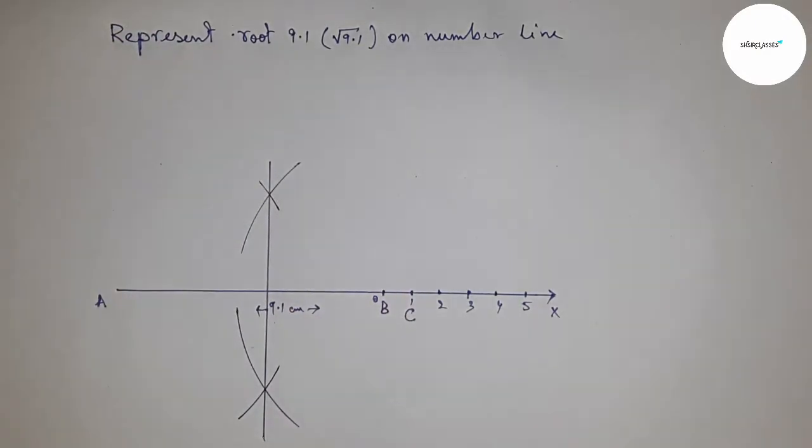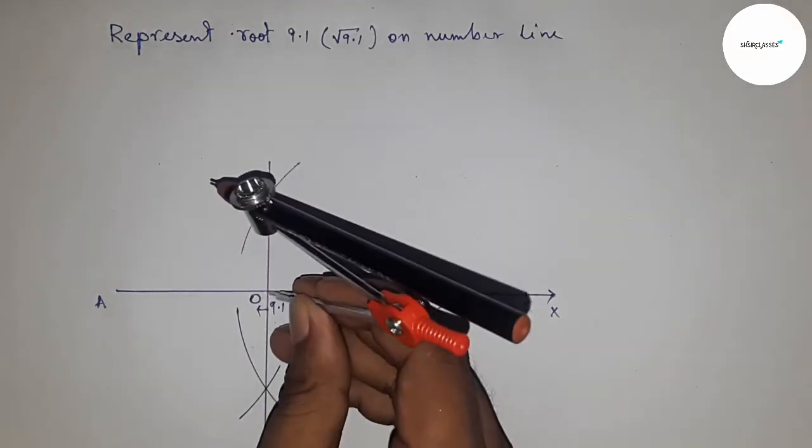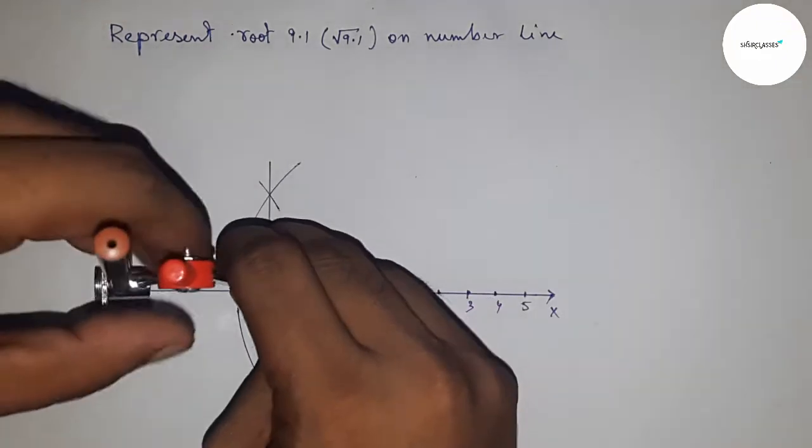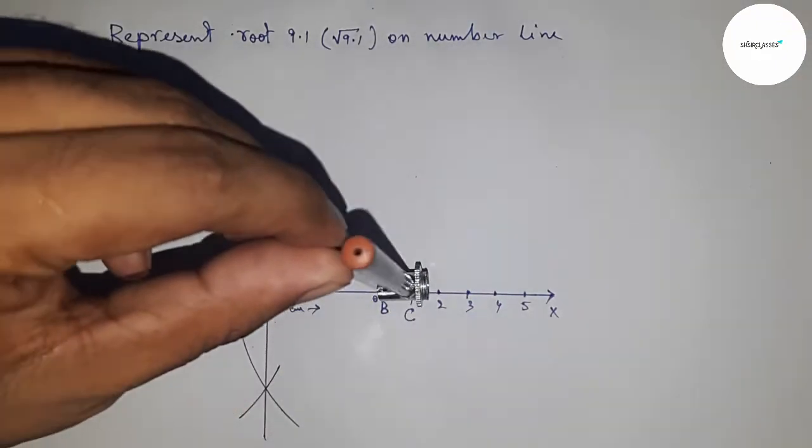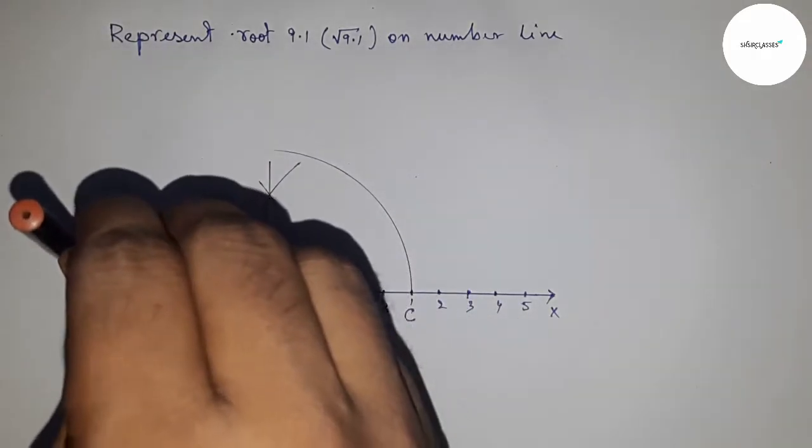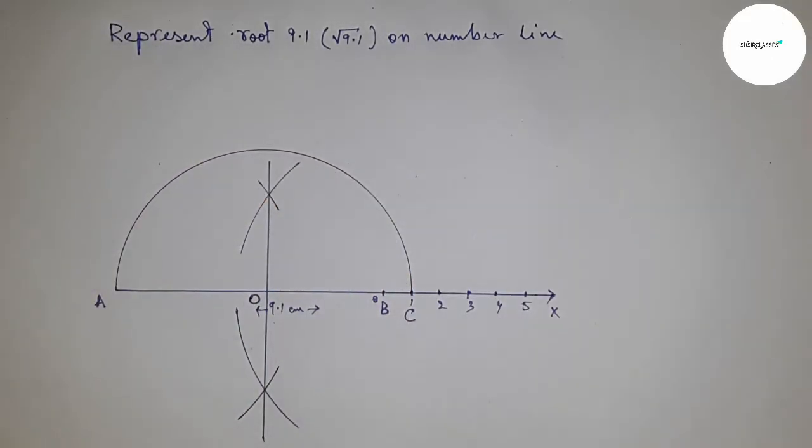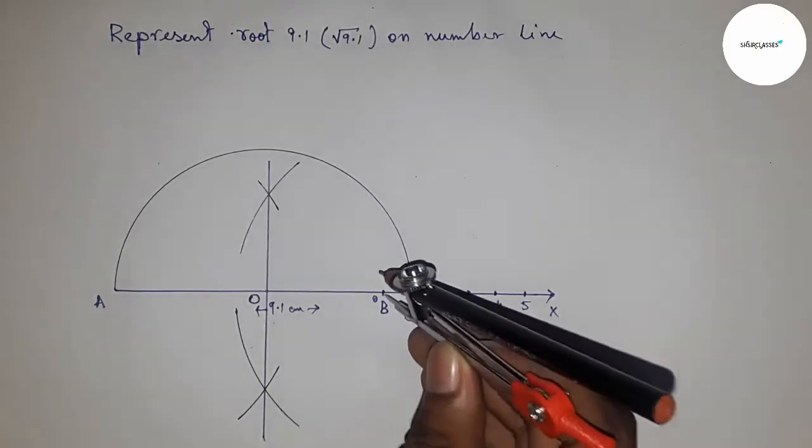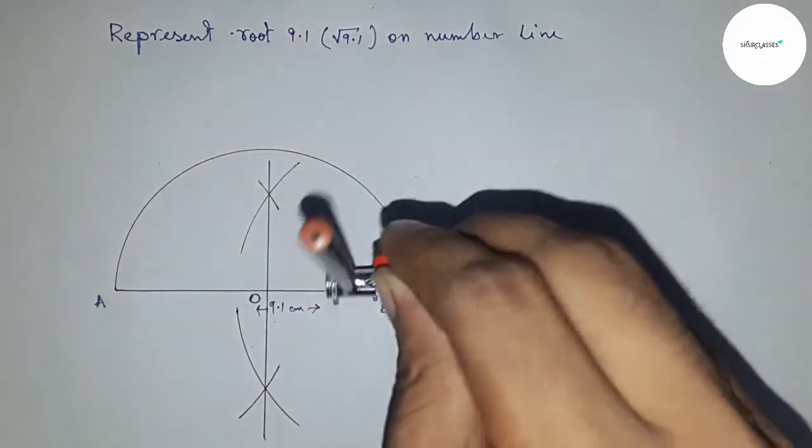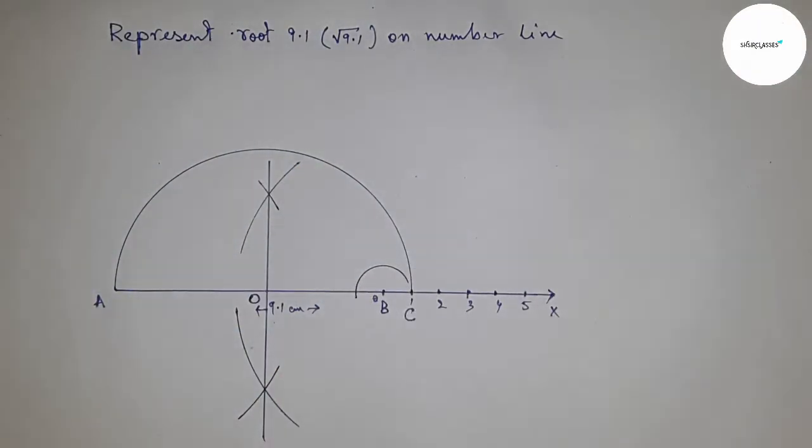This bisects line AC at point O. Next, take the distance OA and OC to draw a semicircle. Now draw a semicircle. Next, draw a 90-degree angle at point B.